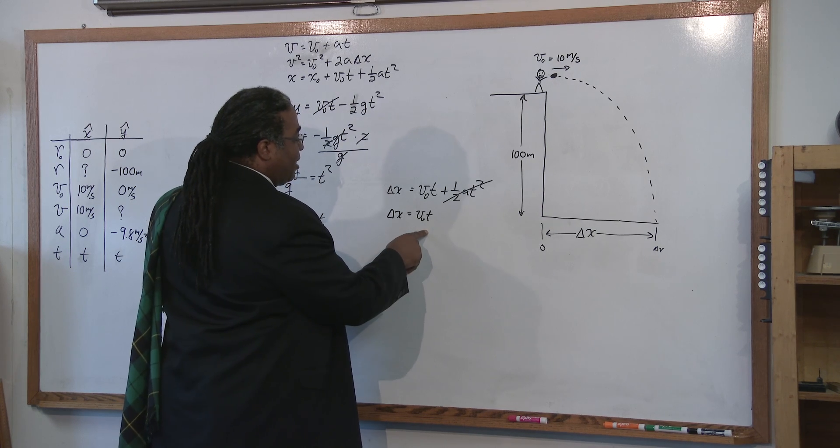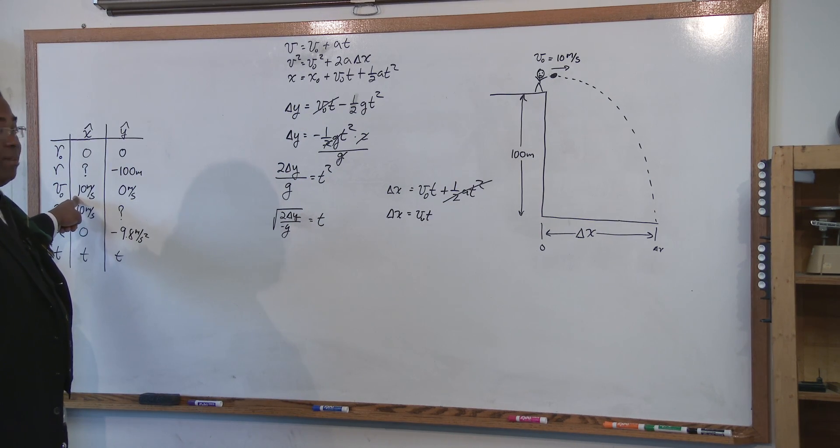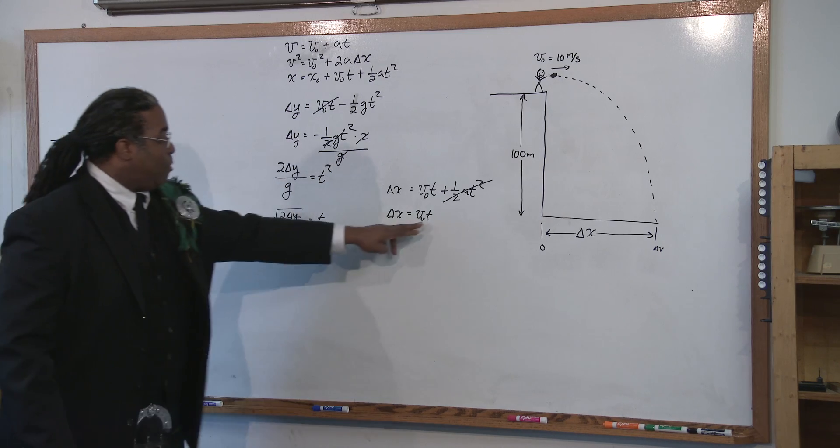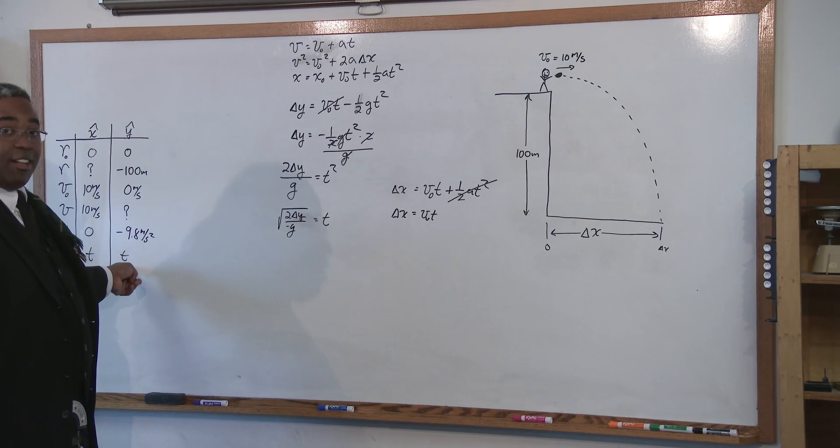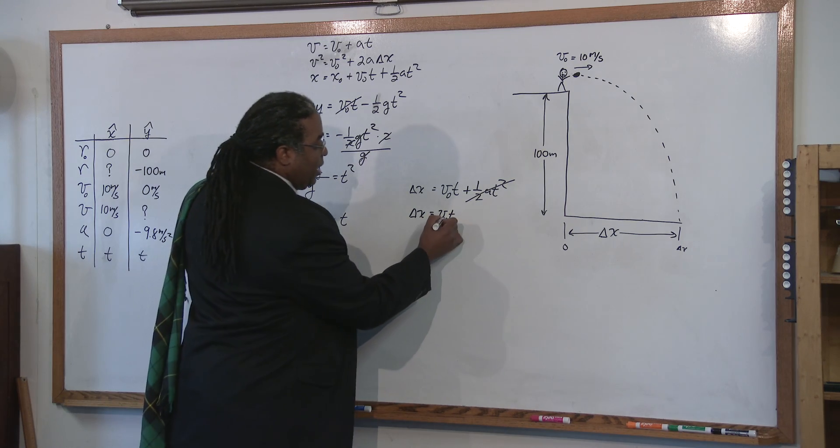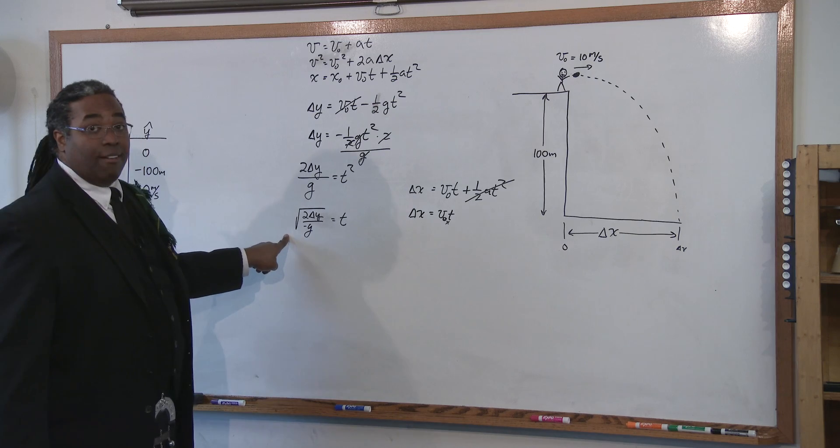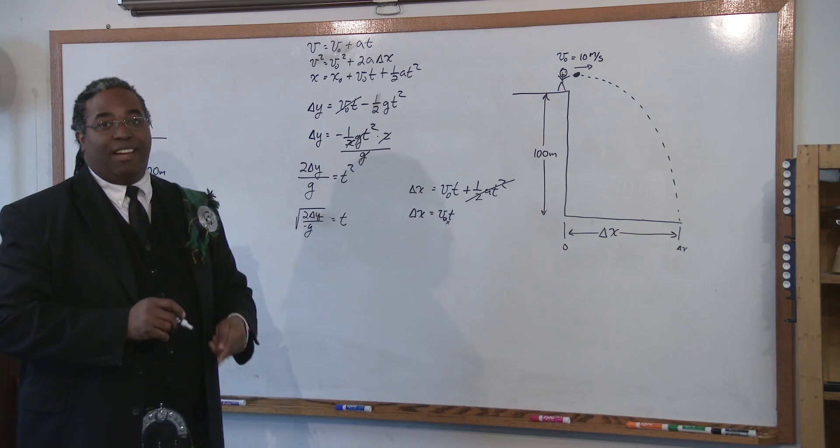We want to know what delta x is. Well, we know what the initial velocity is in the x, it's 10 meters per second. We now know what the time is in the x because we can solve for it. So therefore, your delta x becomes the initial velocity in the x direction times the time that you would have solved for from the y. And there you have your answer.